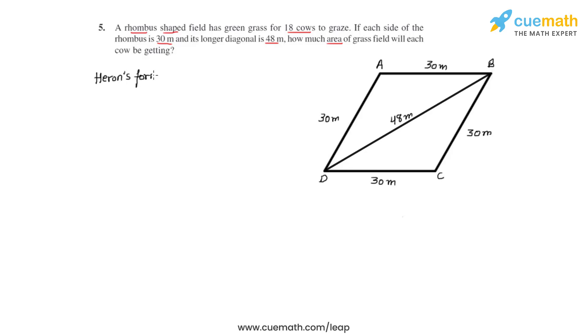Let's write Heron's formula, by which we will be finding the areas of these two triangles. Heron's formula says that the area A of any triangle equals under root s times (s minus a) times (s minus b) times (s minus c), where s is the semi-perimeter while a, b, c are the three side lengths of a given triangle.